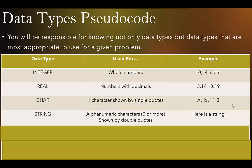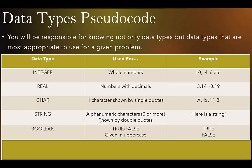Then we have STRING — alphanumeric characters, anything on the keyboard, shown by double quotes. The CHAR data type takes up less space than a string because it records one character. A string can be one character, zero characters to initialize it, or multiple characters. Then we have BOOLEAN — this is simply TRUE and FALSE. It's given in uppercase because they are keywords, so it will come out to either TRUE or FALSE.